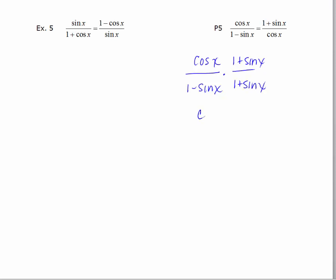In the numerator, we get cosine x times 1 plus sine x. When we distribute or multiply out the 1 minus sine x times the 1 plus sine x, we get the difference of two squares again. 1 minus sine squared x.